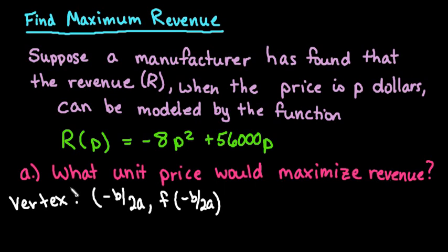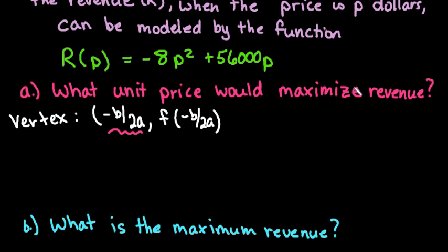So the first question that they ask is what unit price would maximize revenue? So we're simply looking for the x coordinate of this one. So to do that what we're going to do is look at our equation. Remember that A is going to be our leading coefficient of our quadratic term and B is always the term in front of the linear including the sign. So this would be positive 56,000.